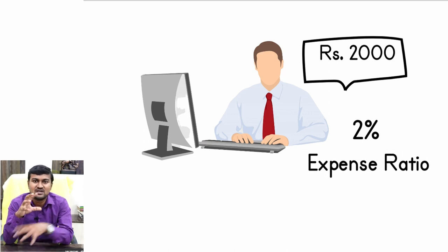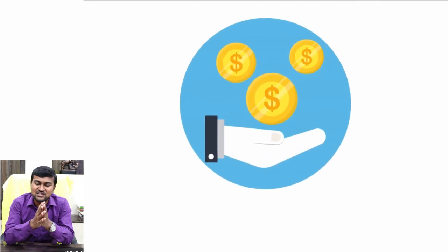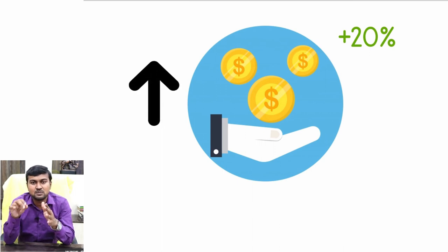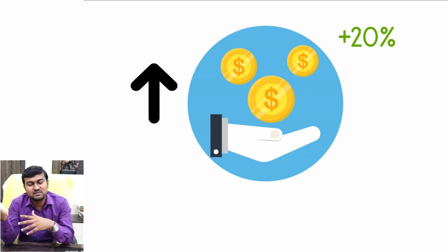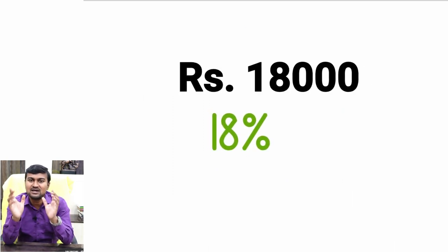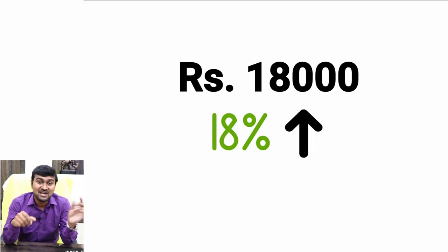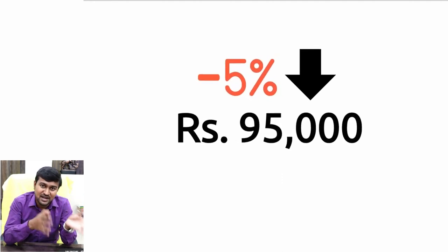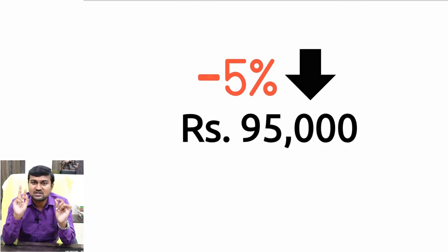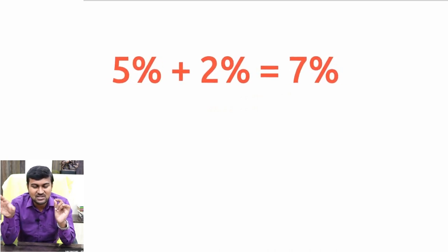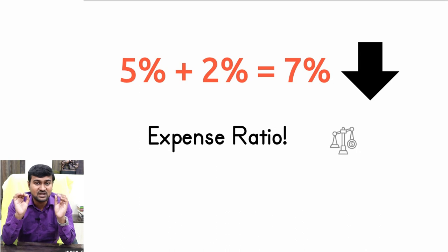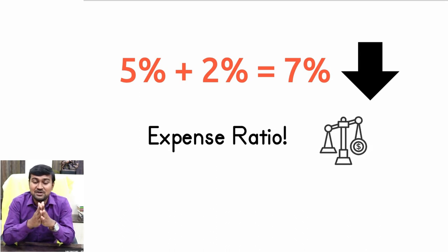Say that 1 lakh rupees invested in shares becomes 1 lakh 20 thousand — a 20 percent return. But after deducting the 2000 rupees fund manager salary, the remaining return for unit holders is 18 percent. If the fund generates a 5 percent loss, that 1 lakh becomes 95,000, and after the 2 percent expense ratio, your actual loss is 7 percent. This is why expense ratio is very important as it directly alters your return.